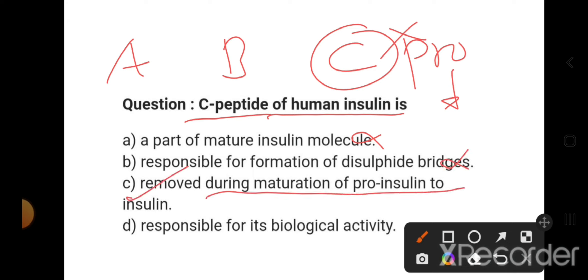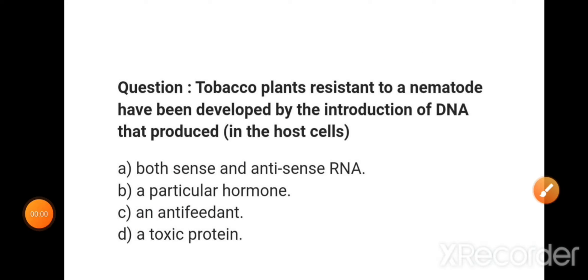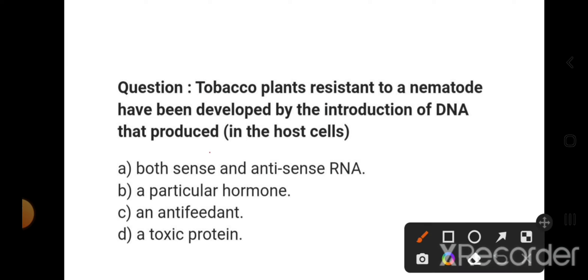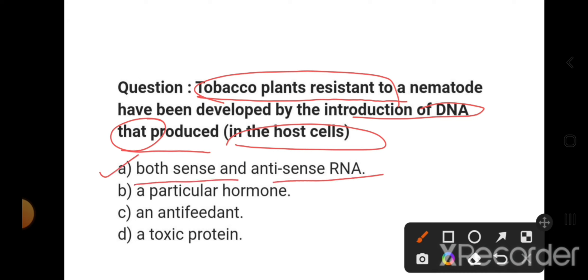Tobacco plant resistant to nematode has been developed by introduction of DNA that produces both sense and antisense RNA in the host cells. This is an RNAi example, so this is the right answer.